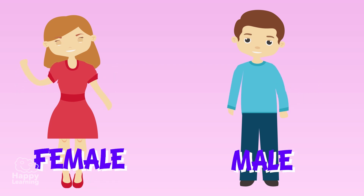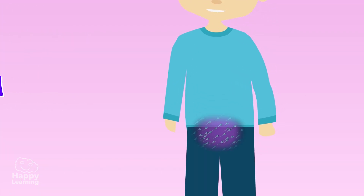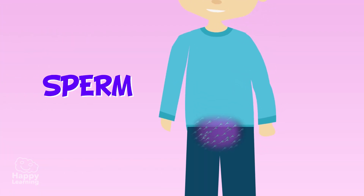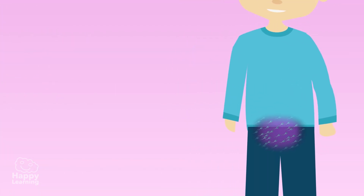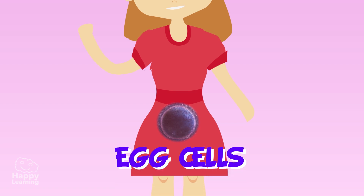The male reproductive system produces sperm, and the female reproductive system produces egg cells.